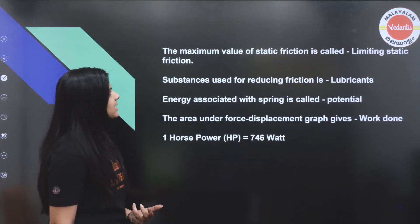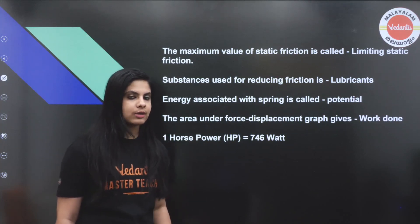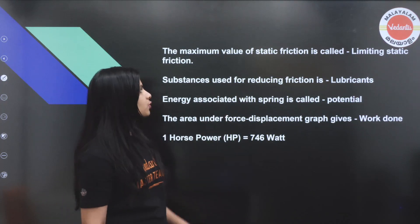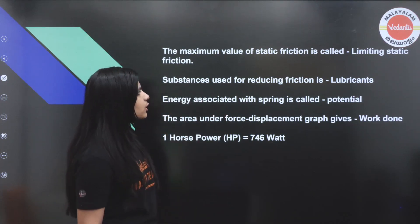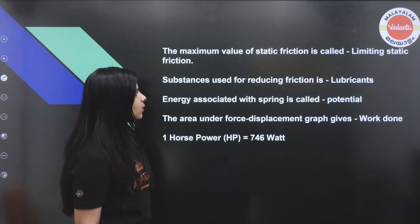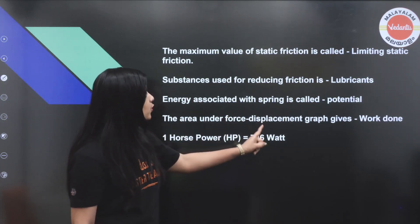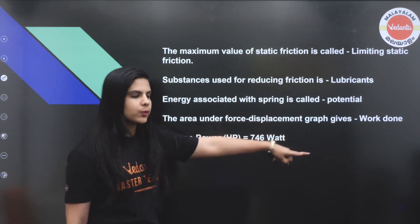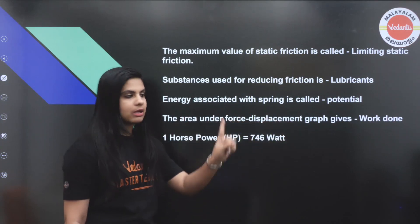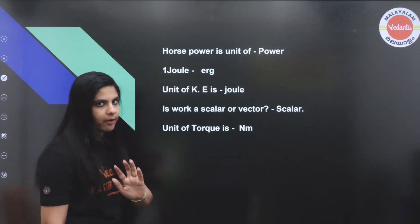The recoil of a gun is based on the law of conservation of linear momentum. The maximum value of static friction is called limiting static friction. Any substance used for reducing friction is called a lubricant. Energy associated with a spring is potential energy. The area under a force-displacement graph gives work done. One horsepower is equal to 746 watts, and horsepower is a unit of power.